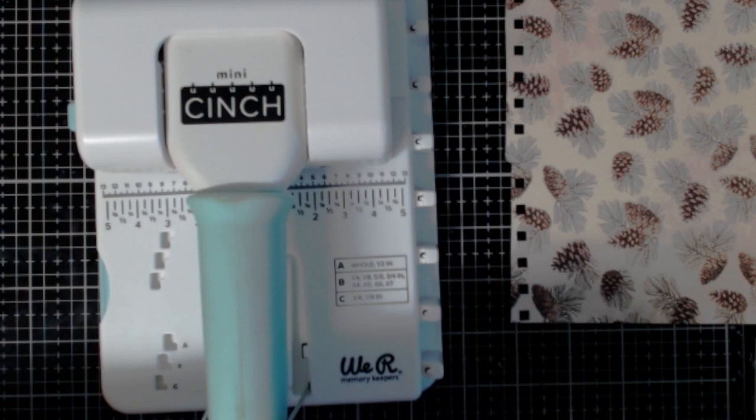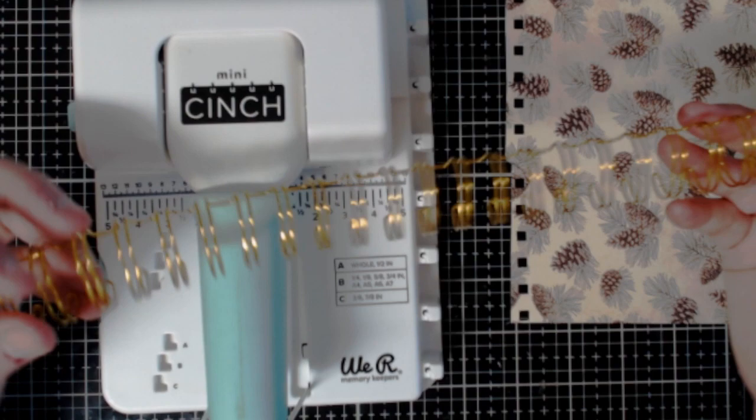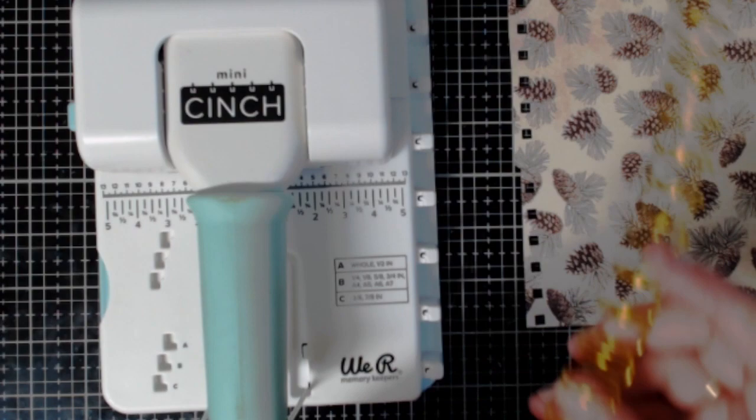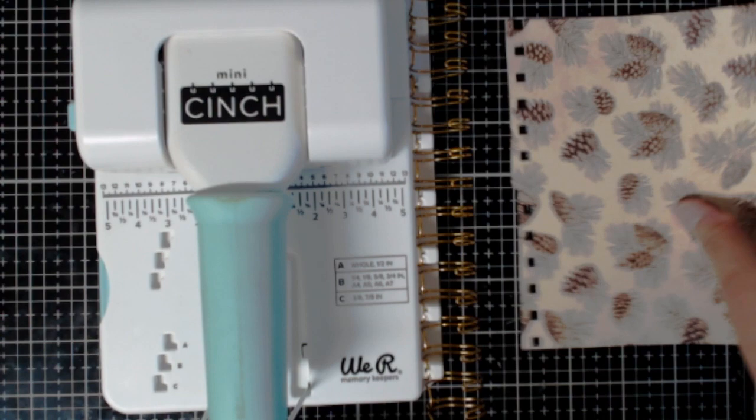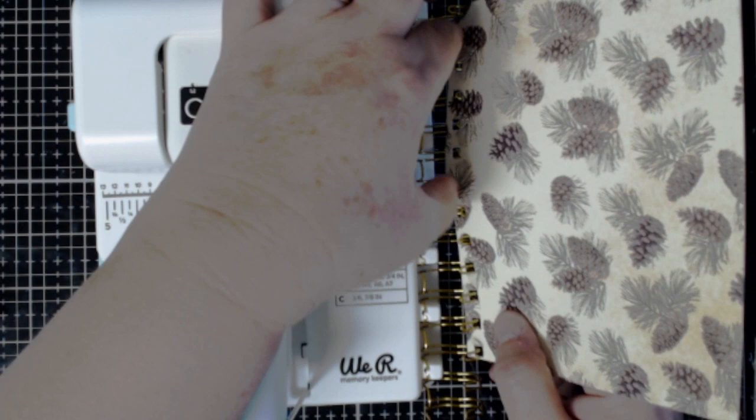Now the way that the wire works is it comes, this is 12 inches. But you can cut this. And then what you do essentially is you place it down here. And then you add your paper just like this.